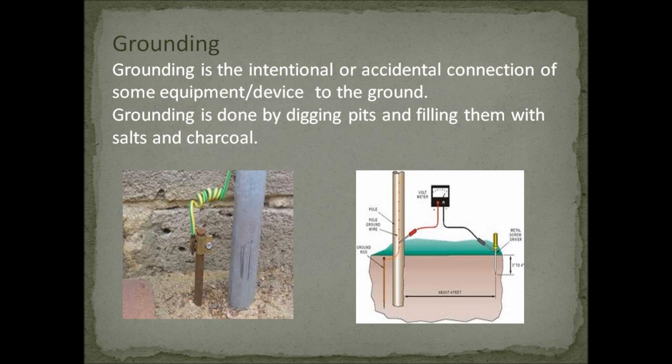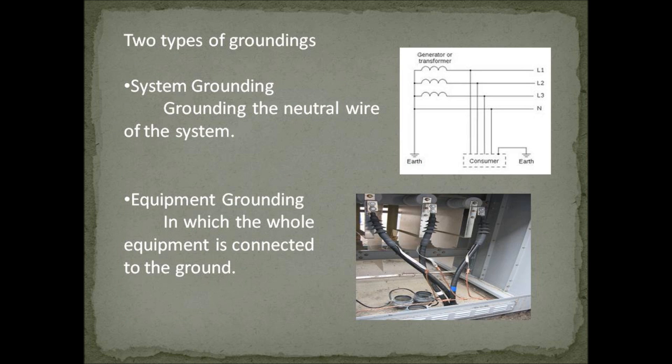Grounding is the intentional or accidental connection of some equipment or device to the ground. Grounding is done by digging pits and filling them with salts and charcoal. In summer, water is poured into these pits in order to decrease their resistance. There are two types of grounding: system grounding, which involves grounding the neutral wire of the system — the actual grounding of a current carrying conductor usually called the neutral of a power distribution system.